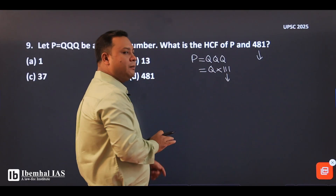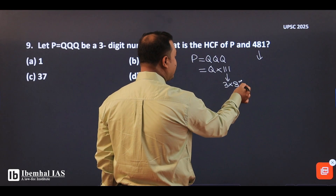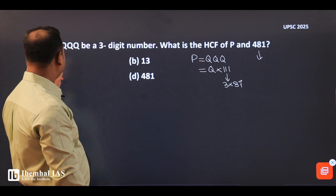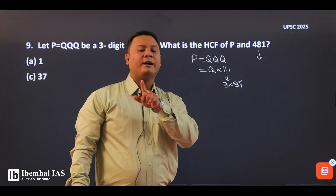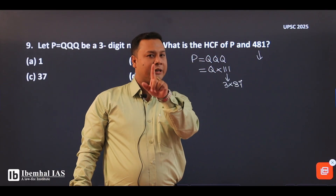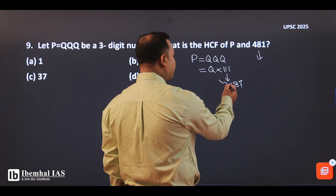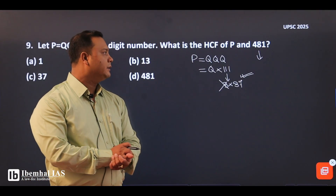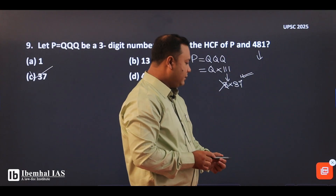In general, for three-digit numbers: three times 37 gives 111, and three times 7 equals 21. So 37 times 3 = 111. For the structure of QQ: three into three is nine, three times seven is 21. The answer — option number C, which is 37, is correct.